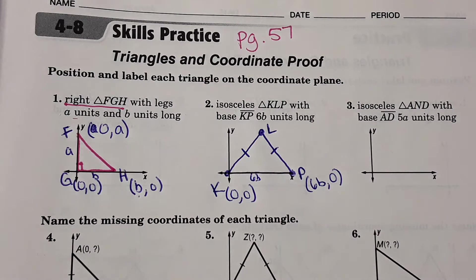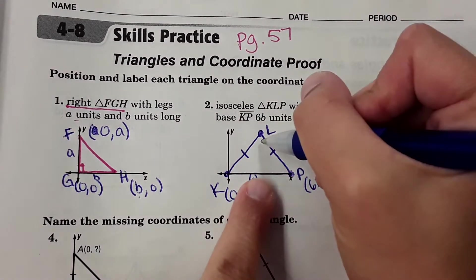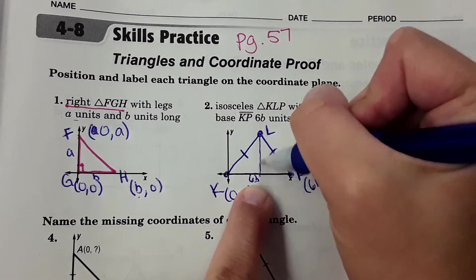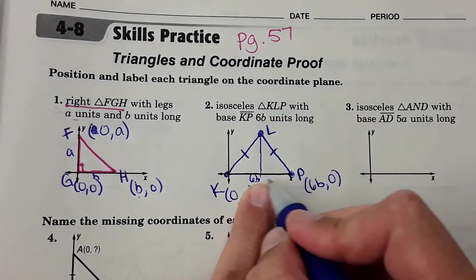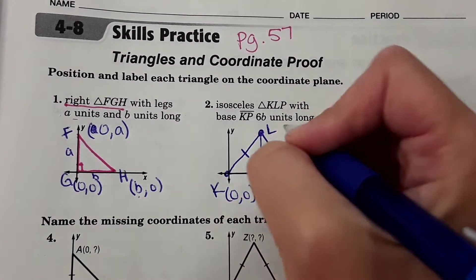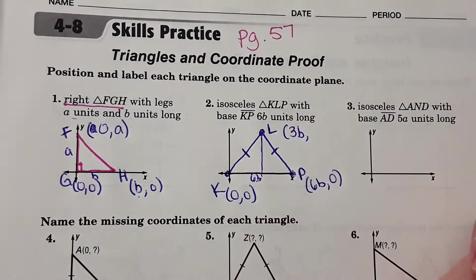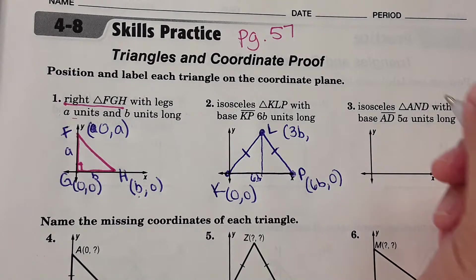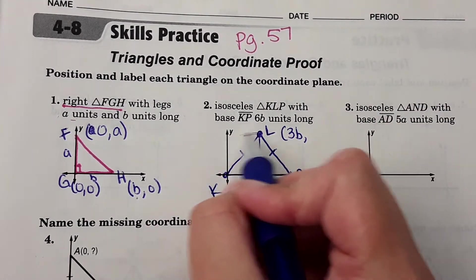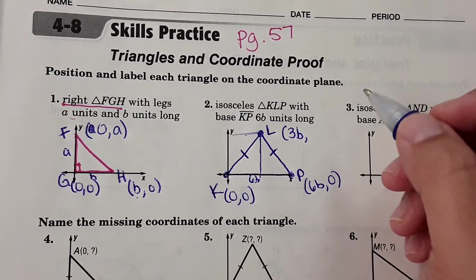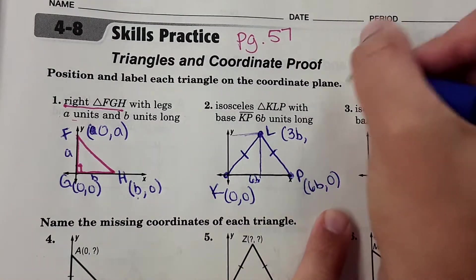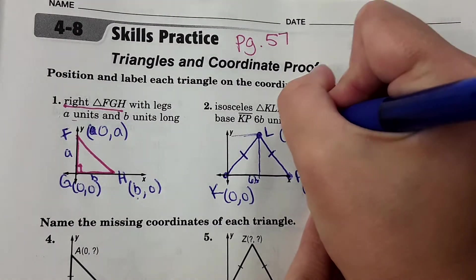So what about L? Well, since it's an isosceles triangle, this is at the midpoint here, so this is at three B, which is half of six B. Three B for the X, and then the height here we don't know. So what we're going to do is choose a new variable, which will just choose the next letter in the alphabet, which is C.